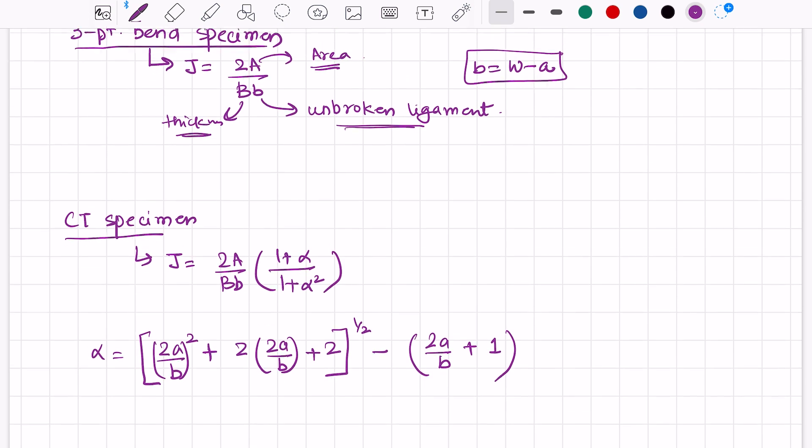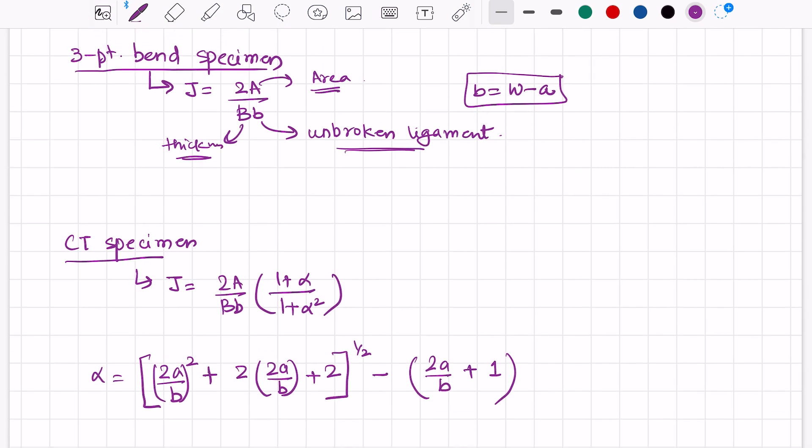For CT specimen, J-integral will be equal to 2A by B times b times [1 plus alpha divided by (alpha times (1 plus alpha squared))], where alpha is 2a by b squared plus 2 times (2a by b plus 2) to the power half, minus (2a by b plus 1).